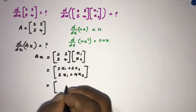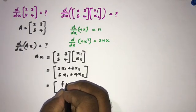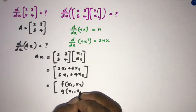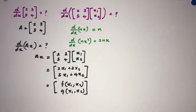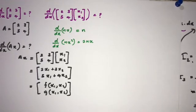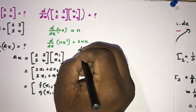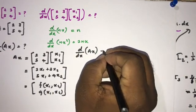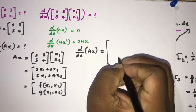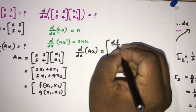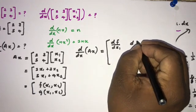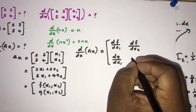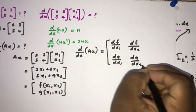We can write this as function f(x1, x2) = 2x1 + 3x2 and function g(x1, x2) = 5x1 + 4x2. The derivative of Ax is then the Jacobian matrix: [[df/dx1, df/dx2], [dg/dx1, dg/dx2]].